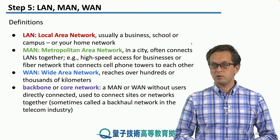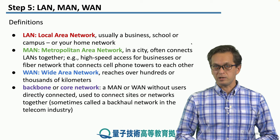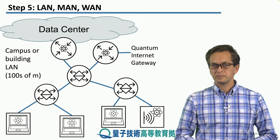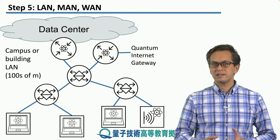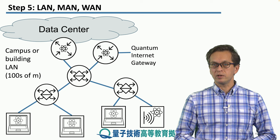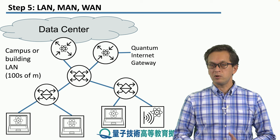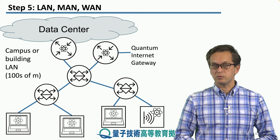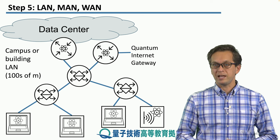So this is a classification of classical networks, but it applies to quantum networks as well. So let's look at a particular example of a quantum local area network, a quantum LAN.